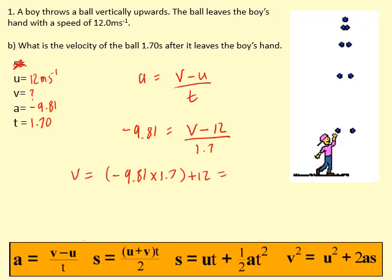This gives me a speed of minus 4.68 meters per second. Now the minus here shows that it's actually going downwards. So we're somewhere over here, going downwards after 1.7 seconds.